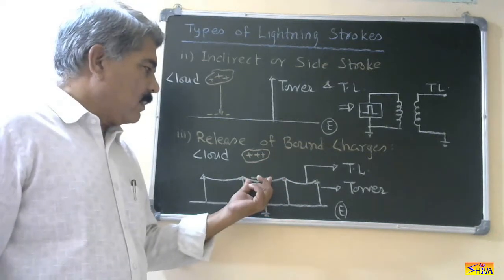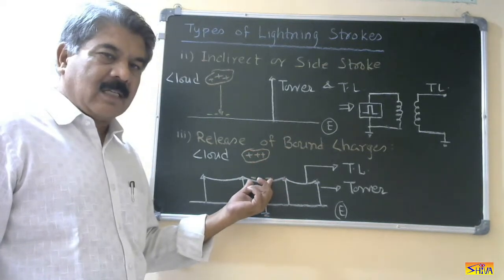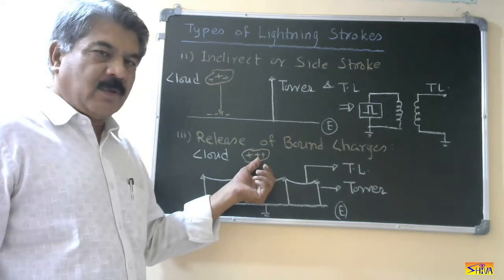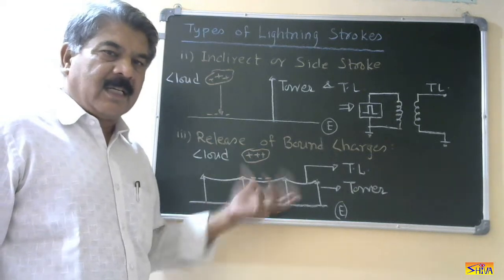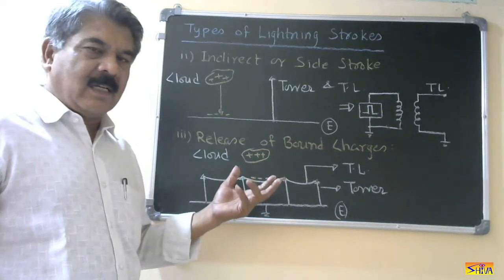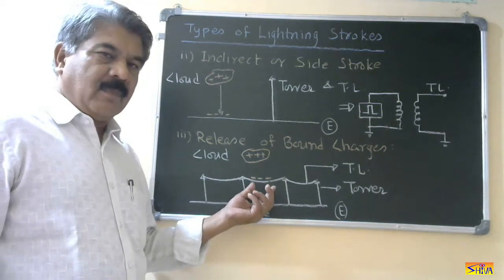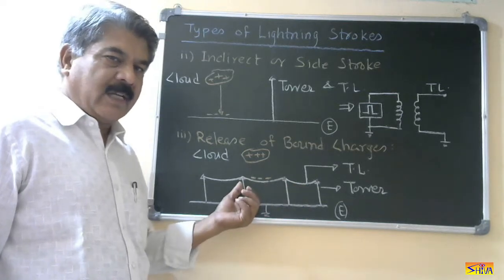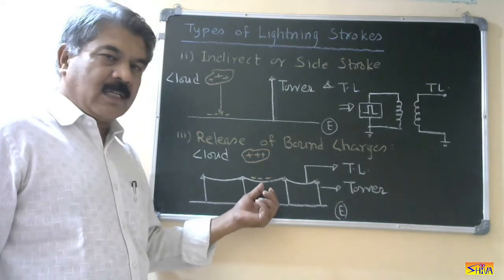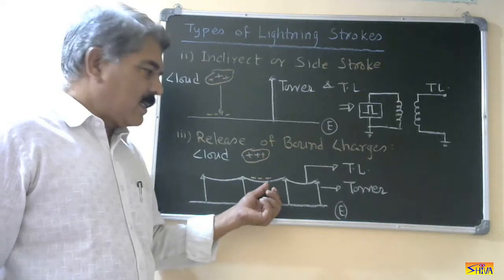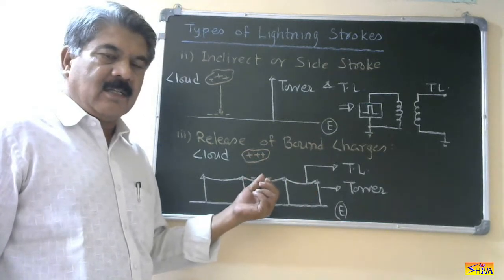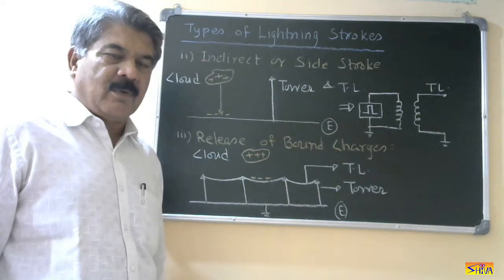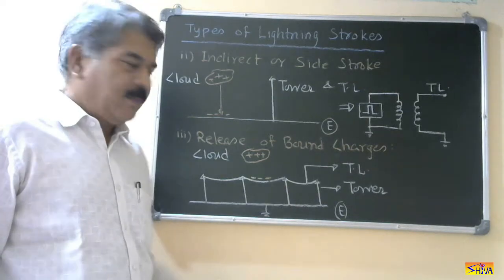In that case, the negative charges which were held up on the transmission line due to the presence of the positively charged cloud will be suddenly released. When these charges are released, they establish traveling waves of high magnitude in both directions. If the total charge is Q, then charges will flow in both directions with magnitude Q/2, establishing traveling waves in the transmission line.